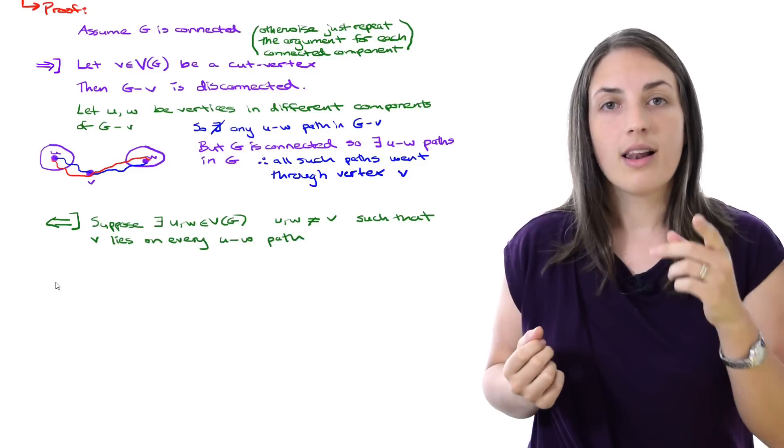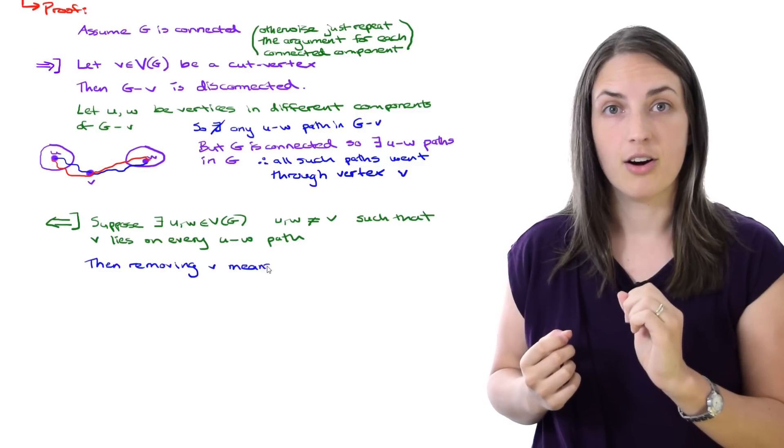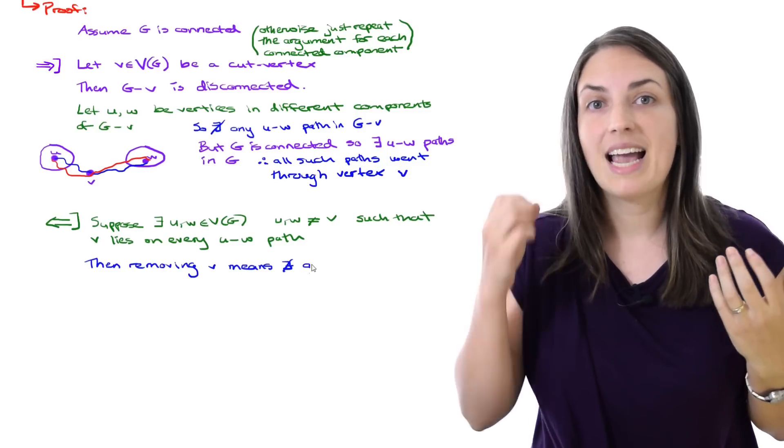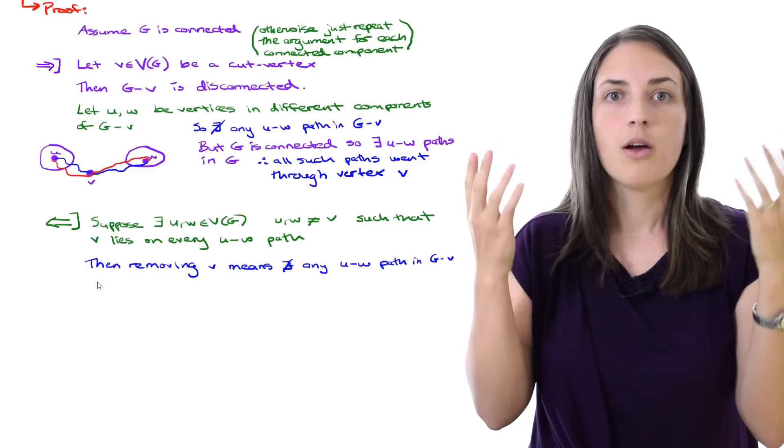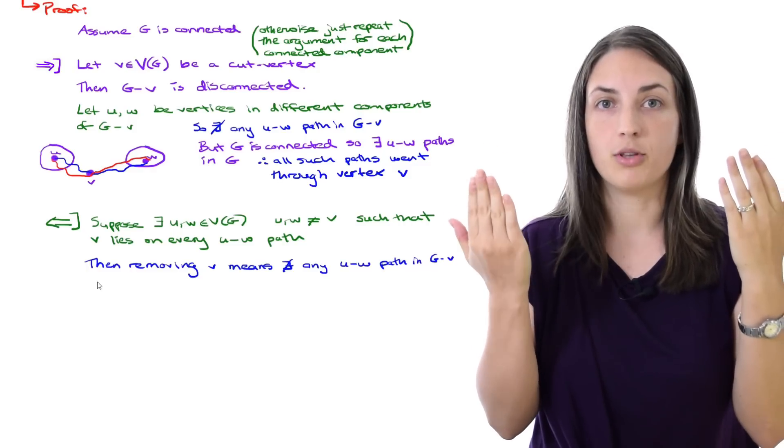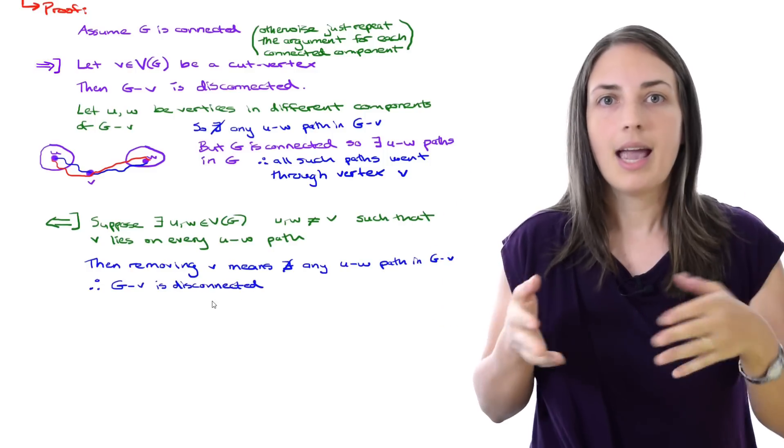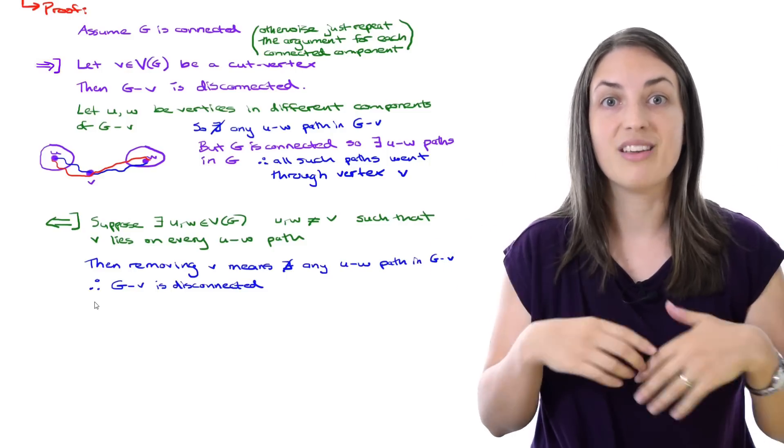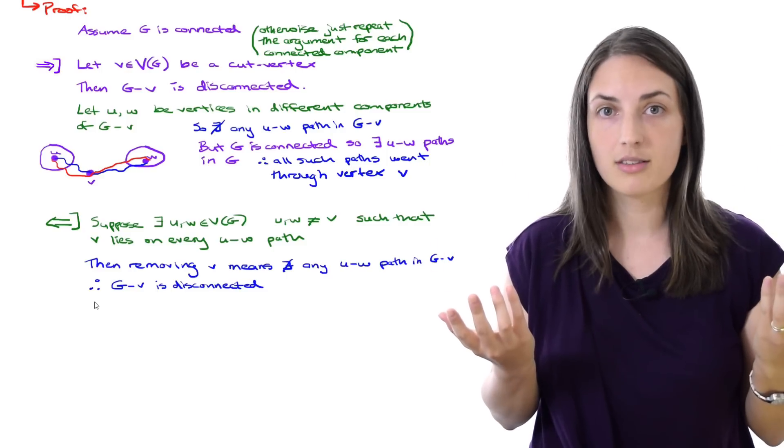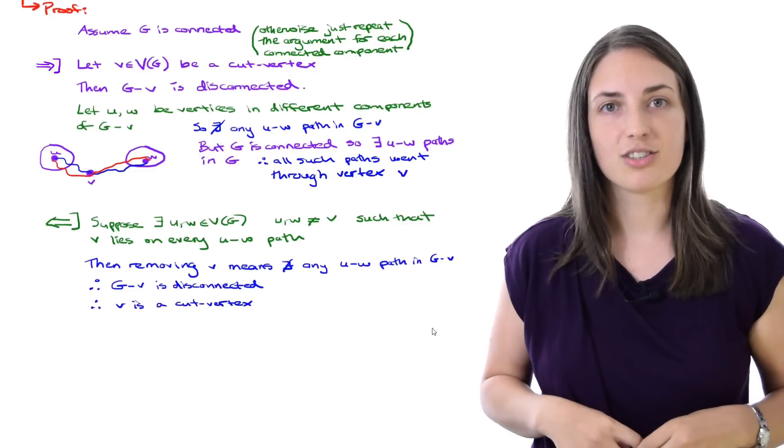Let's think about what that means. If I was to remove vertex V from the graph, now there can no longer be any U, W path. We already know it had to go through V. Well, that means there's no path from U to W, which means there are at least two components. The graph is disconnected and that's exactly what we know. We've gone from a connected graph to a disconnected graph. We've increased the number of components, so that means V is a cut vertex. So that direction is also pretty straightforward.